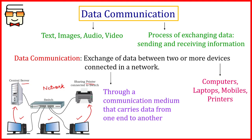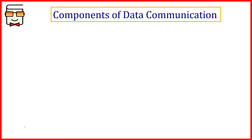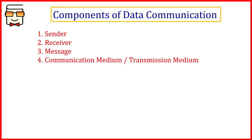This is the concept of data communication, and this is what we will be studying in detail in this chapter. Starting with data communication, we first need to know the five most important components. The five components are: the sender, receiver, message that has to be transmitted, the communication medium (also called transmission medium), and the fifth is protocols.